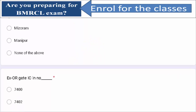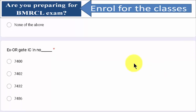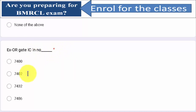XOR gate IC is which number? The XOR gate IC number is 7486. For reference: 7400 is for 2-input NAND gate, 7402 is for 2-input NOR gate, 7432 is for OR gate, and 7486 is for XOR gate. Comment your answers in the comment section.